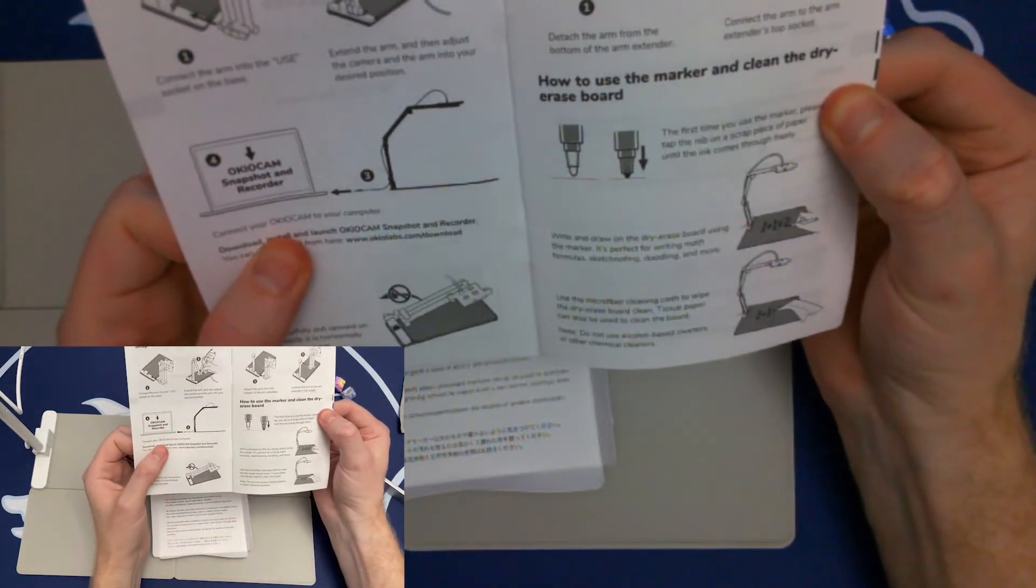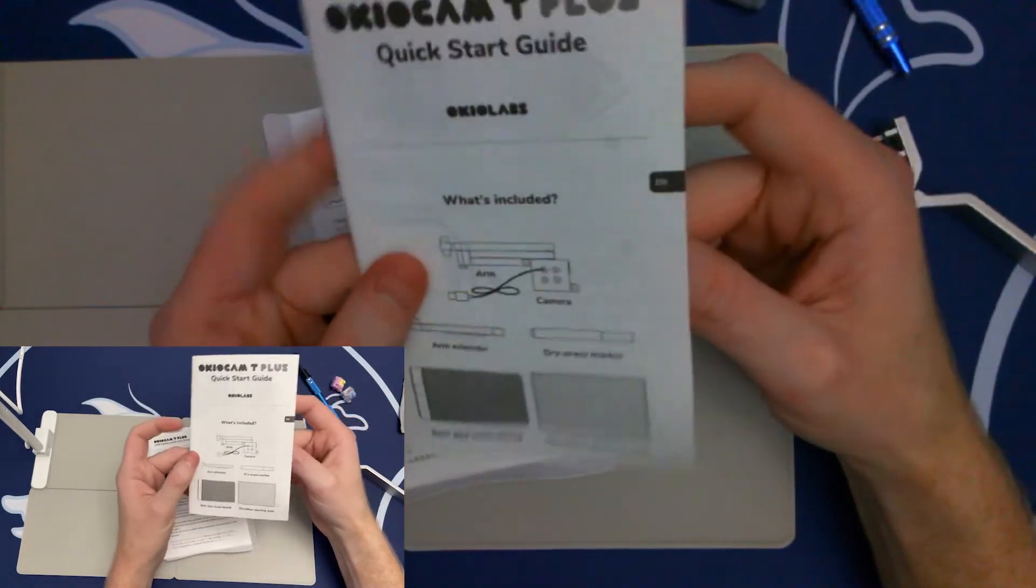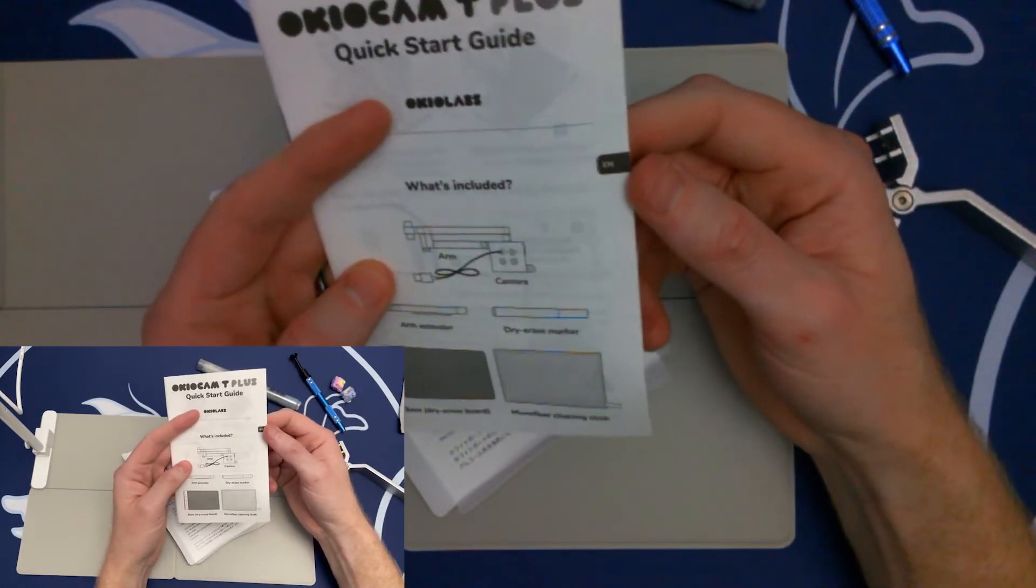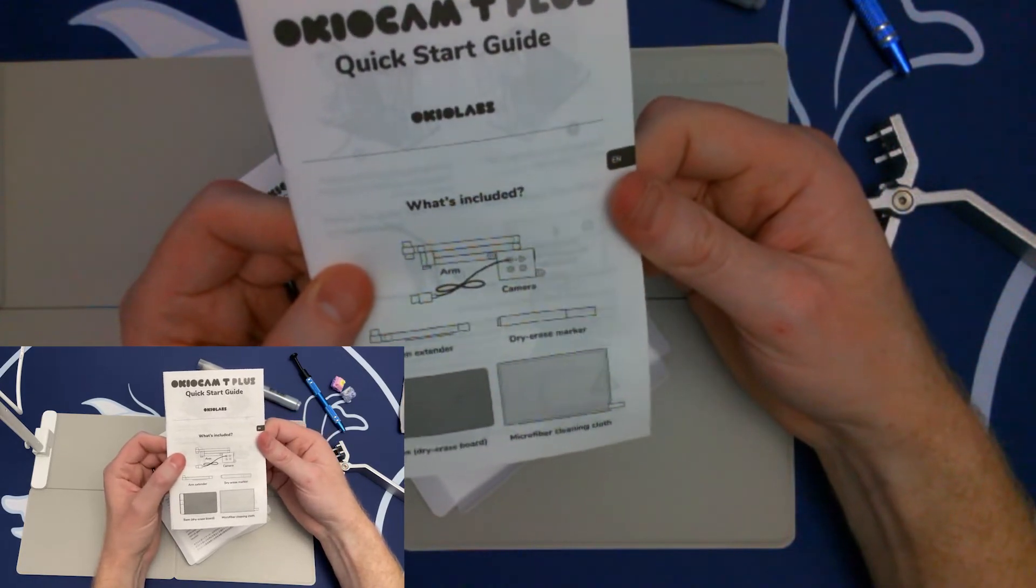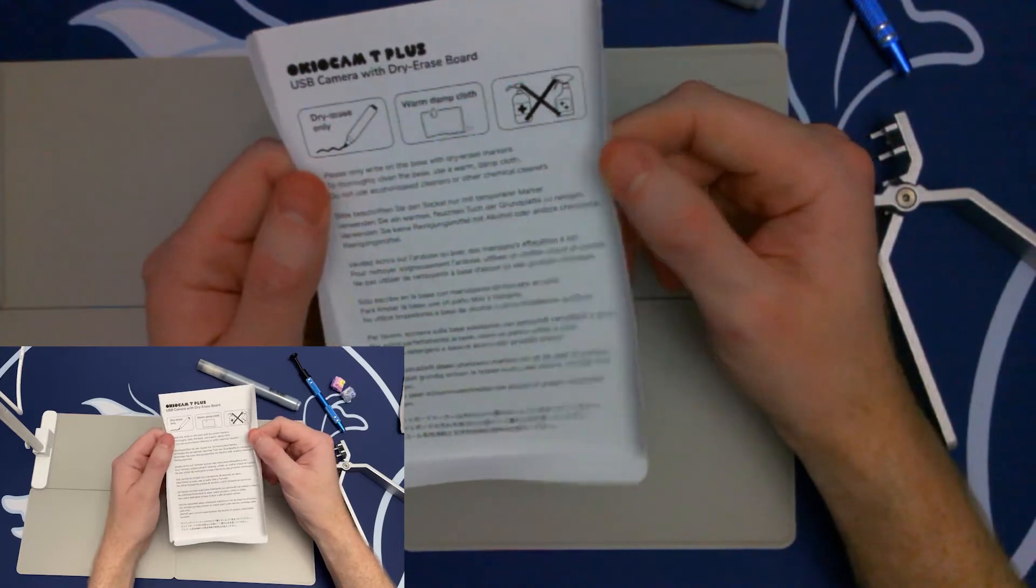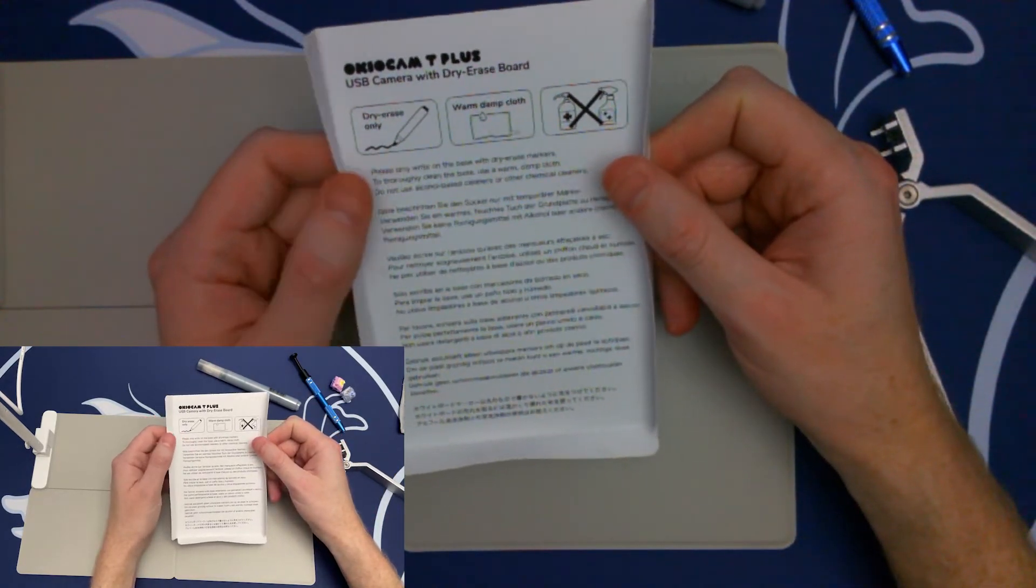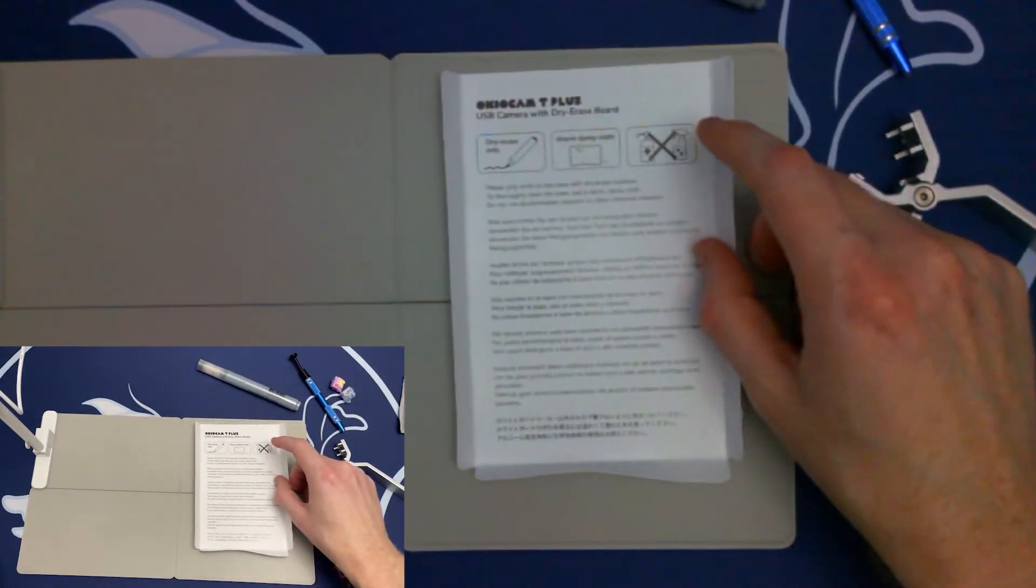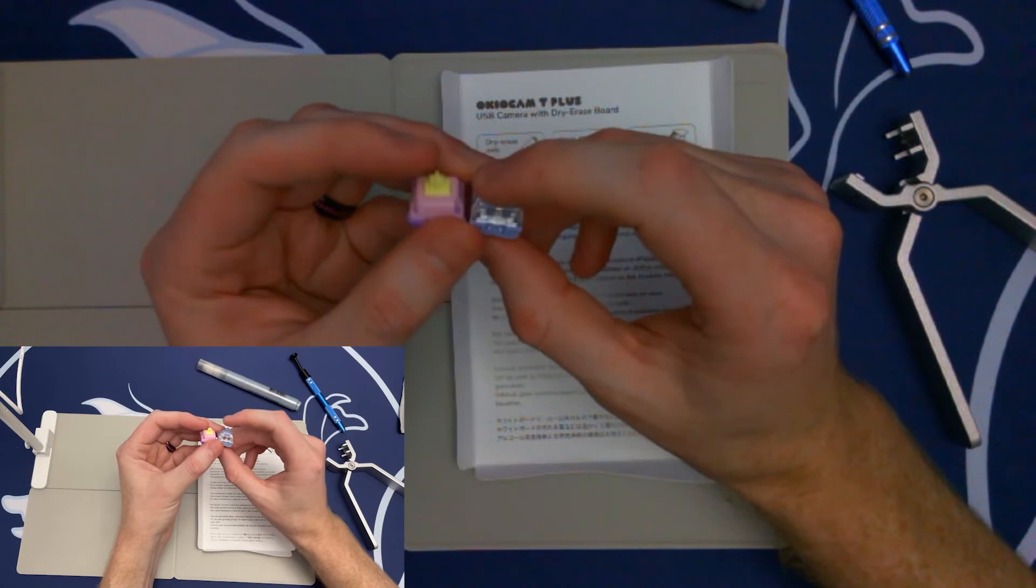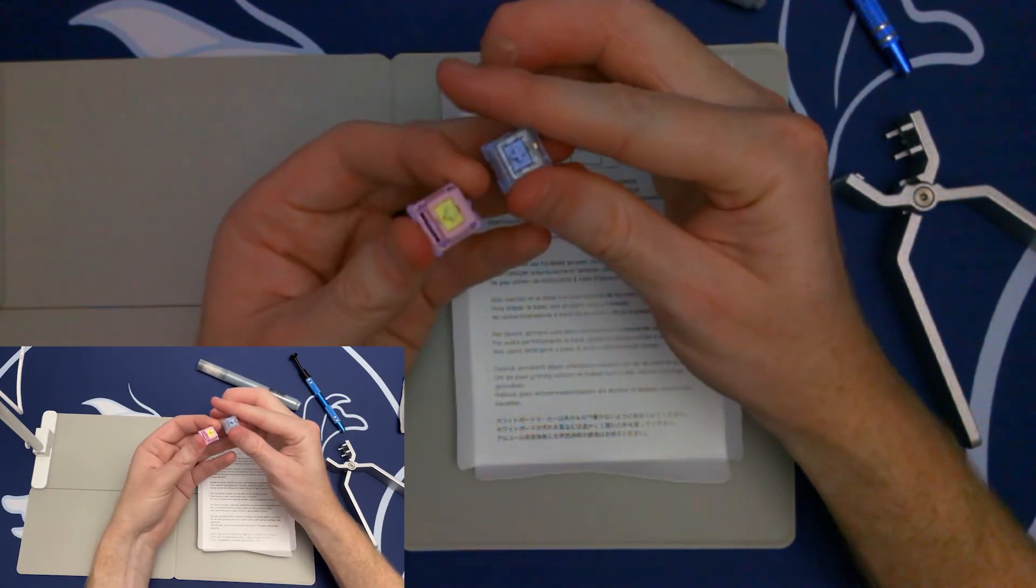But this is the OkioLabs T Plus. They do have a snapshot and recorder program that you can download from their website, okioLabs.com slash download. This again, I'm using OBS to capture anything, which is working just fine. This will work with Teams, with Google Meet, with Zoom calls, things like that for any sort of educational or any sort of meeting purposes. You can go through and use this for a different perspective. You'll be able to change your camera input depending on what program you're using. And you just switch it over to the Okio T is what it showed up for me. So if you guys have any questions, comments, concerns on the OkioLabs T Plus, let me know down in the comments below and I will do my best to answer them. Thank you OkioLabs for sending the T Plus over for review and checking out for you all. I will see you all in the next video. Thank you for watching. Take care.